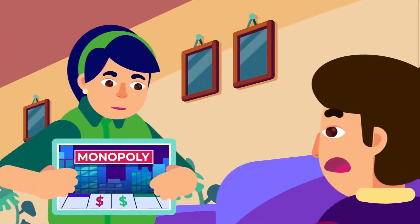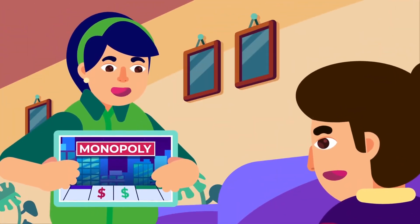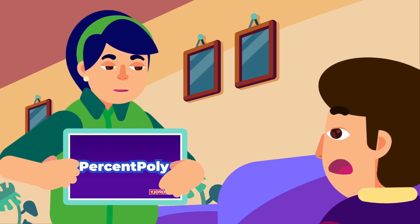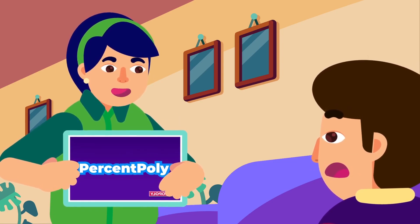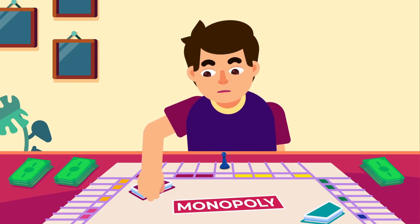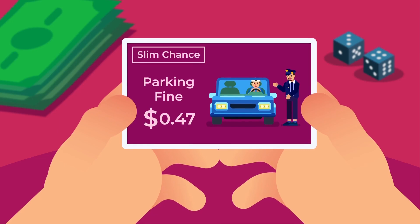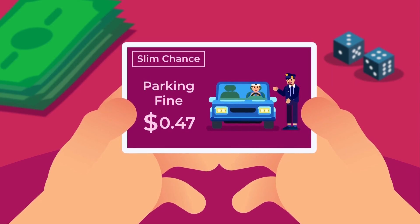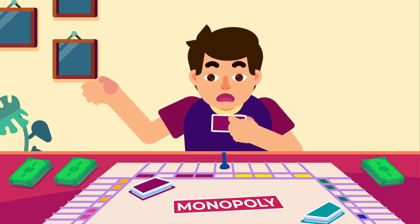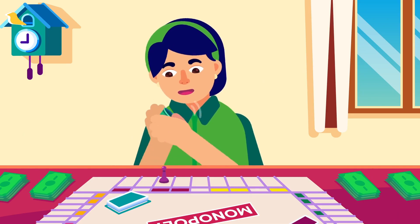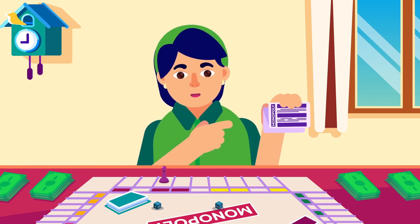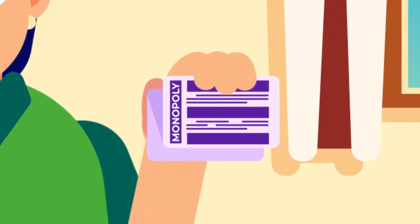Let's say we have this unusual monopoly game, where your money is in decimal number but the properties are in percentage. Take $0.47 for example. How can you tell the amount of dollars that you have in percentage? There are some different ways to know it. In the first method, you must follow these steps.